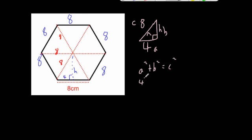So 4 squared plus B squared or H squared equals 8 squared. When you square these you're going to get 16 plus H squared is equal to 64. You take away 16 from both sides. You're going to get H squared would be equal to 48.